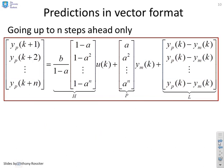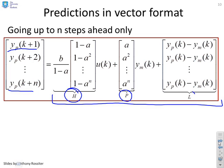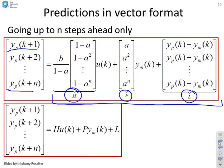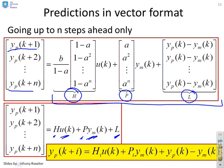Using open loop predictions — based on the assumption that the future input is constant — we can stack predictions from step 1 to step N using a matrix-vector form. I've defined matrices H, P, and L so that the predictions from the first to the Nth sample can be written as H times U(k), plus P times the model output, plus L which is the bias term. For an individual prediction i steps ahead, extract the i-th row of H and P and add the bias term.